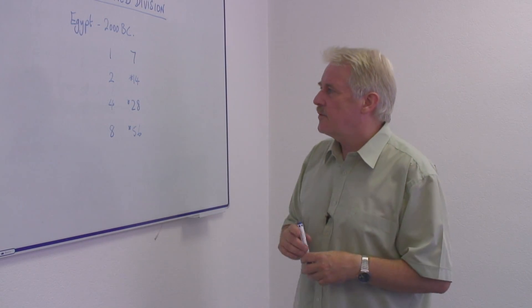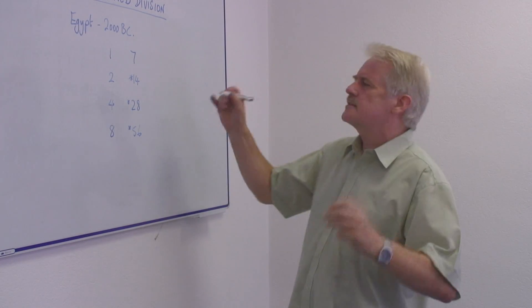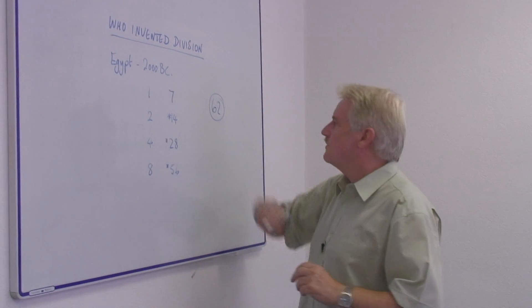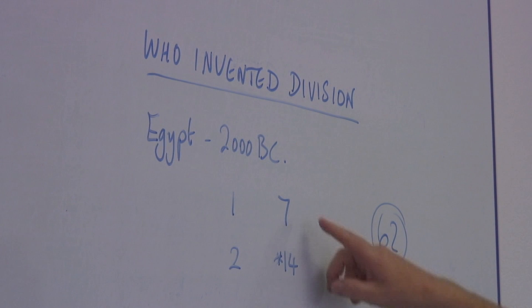So, if I want to divide the number fifty-six by, well let's not say fifty-six, let's say sixty-two. Here's my number sixty-two, and I want to divide it by seven. Well, obviously as I go through this...